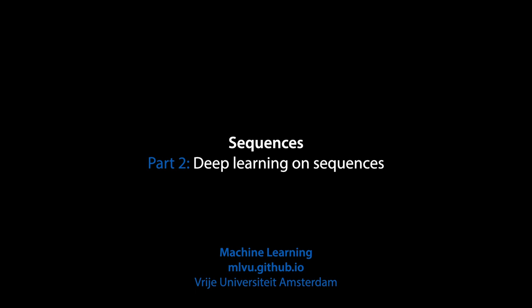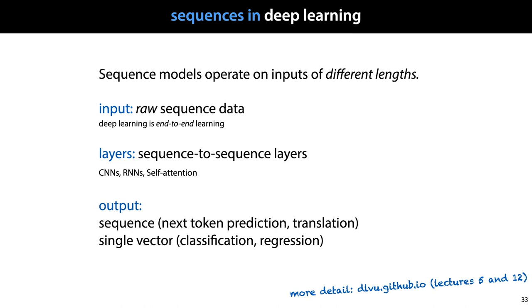And then in the next video, we'll look at an example of the type of layer you might use in a sequence-based model. The basic idea of sequence models is very similar to that of other deep learning models, but the main characteristic is that we need to ensure that the model can handle input sequences of different lengths.